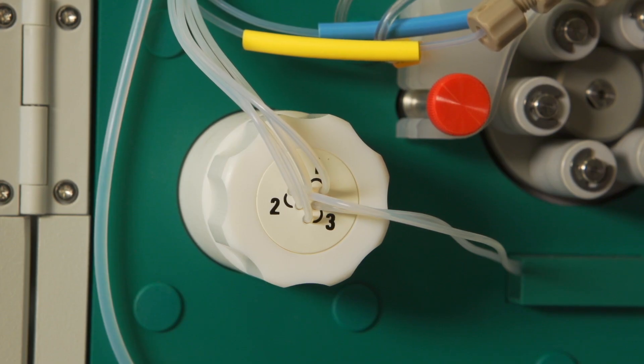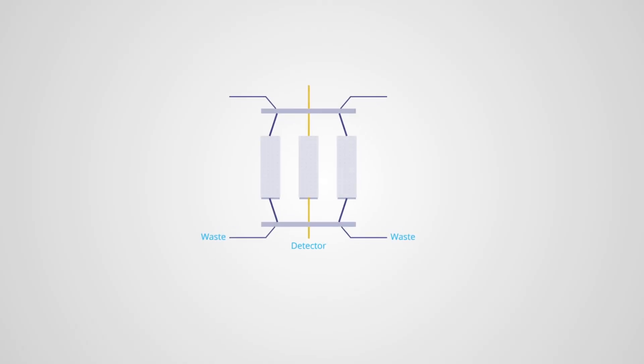After the column and before detection, the separated species and eluent reach the suppressor. The suppressor in this case is a cation exchange device. The function of the suppressor is to reduce the background conductivity of the eluent and increase the sensitivity for the analyte ions.